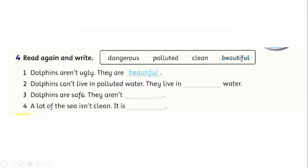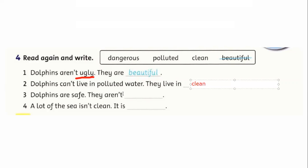Now we are going to put the words in their suitable statements. Number one — dolphins aren't ugly; the opposite of ugly is beautiful. Number two — dolphins can't live in polluted water; they live in clean water. Number three — dolphins are safe; dangerous is the opposite of safe.